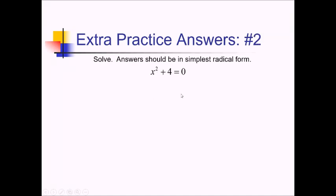For this one, we have no linear term, so that tells us we can solve this one by isolating the x squared and square rooting both sides. To start, let's subtract 4 to get it over to the other side. Now when I square root both sides, I'm going to have x equals plus or minus, and since I'm square rooting negative 4, I can pop an i out of that radical to get just positive 4 inside the radical. So I've got plus or minus i radical 4, and since the square root of 4 is 2, x equals plus or minus 2i.